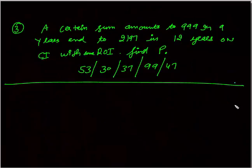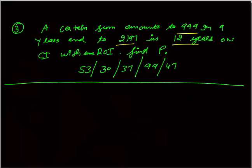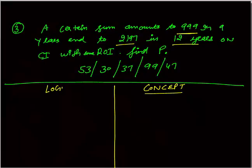Question number 3: a certain sum amounts to Rs. 999 in 9 years and Rs. 2197 in 12 years on compound interest at some rate of interest. You need to find the value of P, the principal. Again you can solve this with the concept method or the logical method — you must know both.